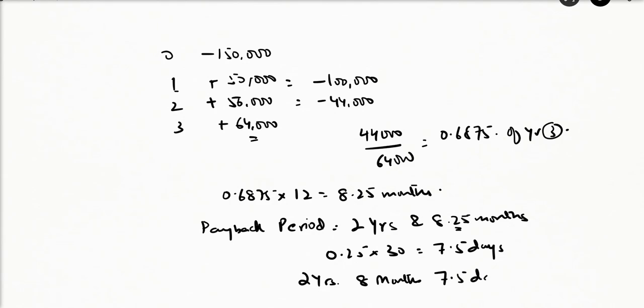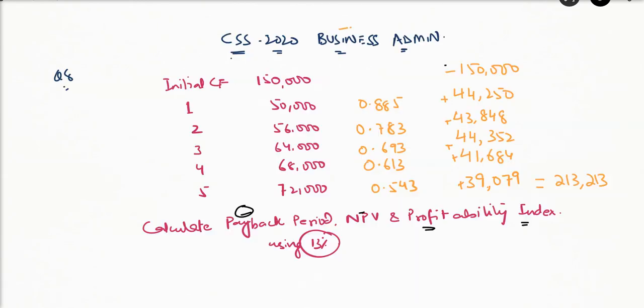I have already calculated the discounted figures, right? What you will be doing for NPV: you would be dividing it by the discount factor, and I have written it down in front of each of the figures.